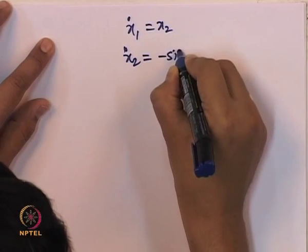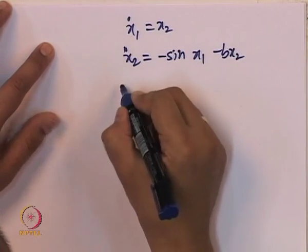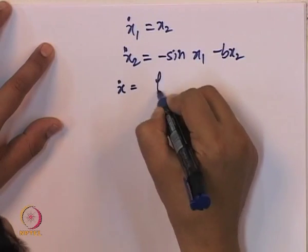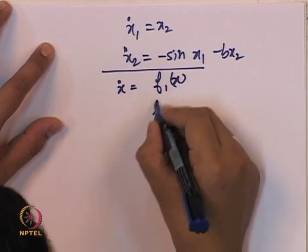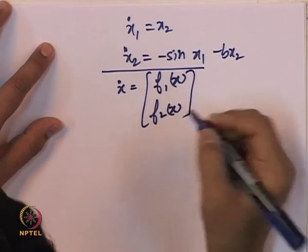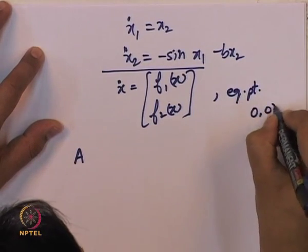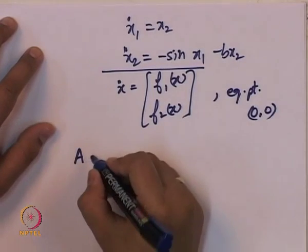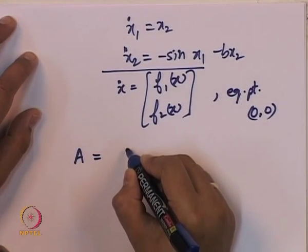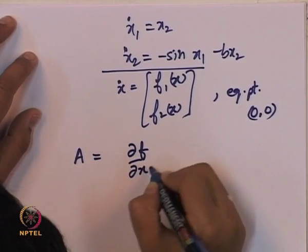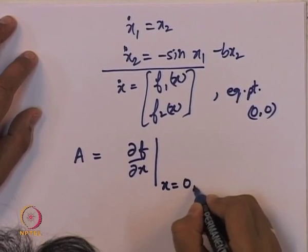We will now investigate whether the linearized system at the origin is also asymptotically stable. Consider x1-dot = x2 and x2-dot = minus sin(x1) minus b*x2. The linearization is the Jacobian matrix evaluated at (0,0). We have already confirmed (0,0) is an equilibrium point.